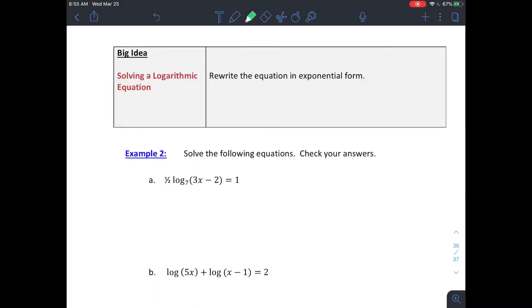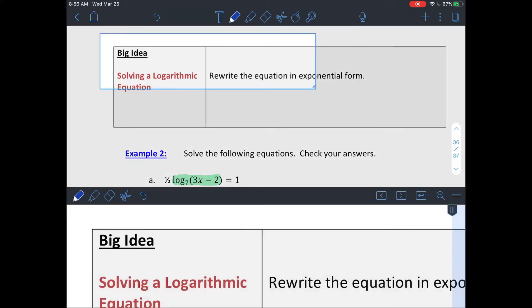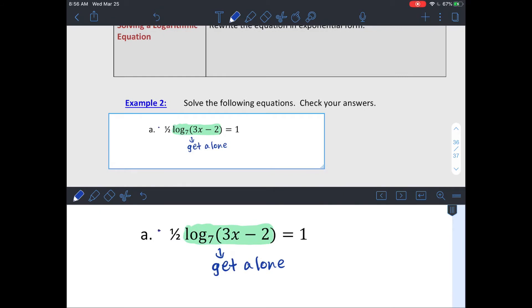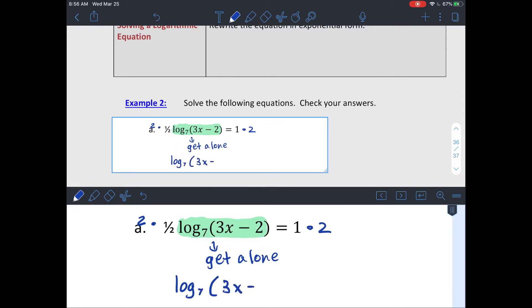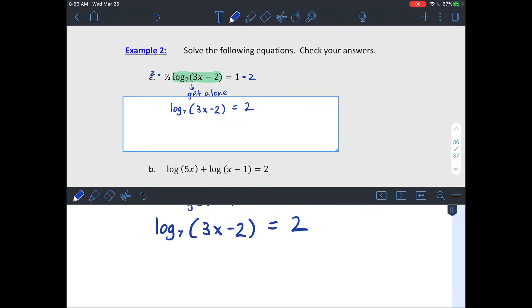Let's try a couple where it's not just a single logarithm on each side. So we're gonna rewrite these in exponential form. But first, we need to get the logarithmic part by itself. So like on this one, it's 1 half times log base 7. So I'm going to multiply both sides by 2, which will give you log base 7 of 3x minus 2 equals 2. So it's not like equal to another log. So instead, let's use what we already know and rewrite in exponential form.